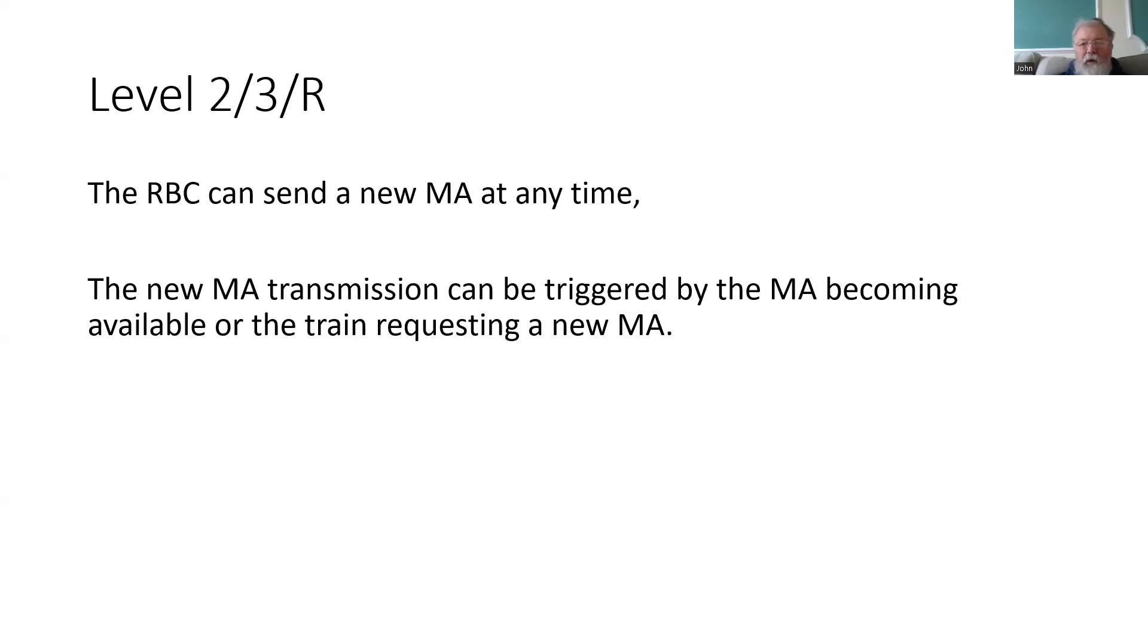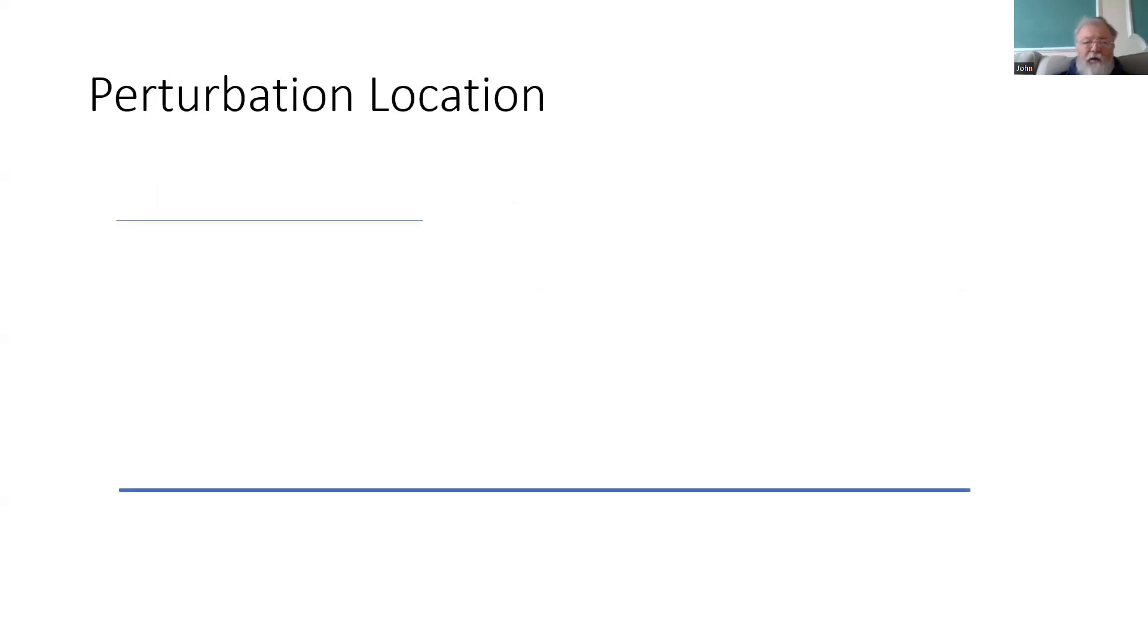But what triggers that? Well, it could be because the interlocking has proven the route to be clear, or it could be because the train makes a request. Now, obviously, we don't want drivers to be slowed down unnecessarily. So we need to detect when the train is going to start asking the driver to brake for the end of authority. This is called the perturbation location.